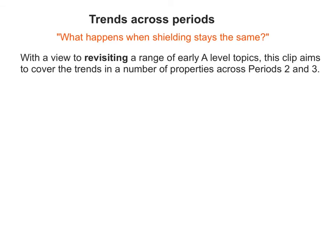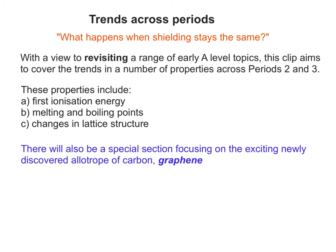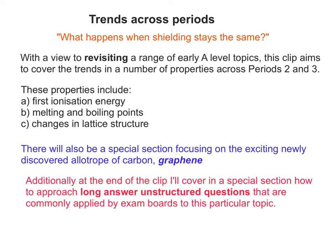By way of reviewing a range of earlier A-level topics in the first year, what we'll try to do in this clip is cover some of the trends in a number of properties across periods 2 and 3. The properties we'll look at are first ionisation energy, melting and boiling points, and any changes in lattice structure as you go across a period. We'll also have a special section on graphene, an allotrope of carbon in addition to graphite, diamond and buckminsterfullerene. This is a common application of structure and bonding in giant structures now coming onto many A-level syllabuses. Finally, at the end of the clip I'll look at how to approach longer-answer unstructured question types, which are commonly applied by exam boards to this topic — so it's worth flagging that up in case you wanted to fast forward to it now.